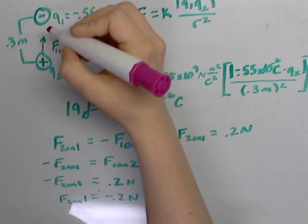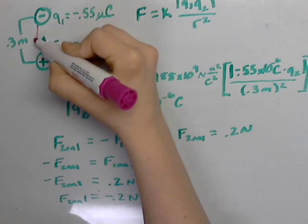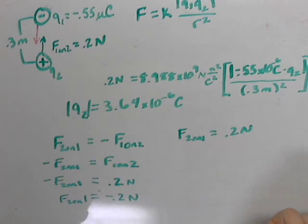Now we can go ahead and draw F of 2 on 1. Since it's negative, it's in the opposite direction of F of 1 on 2, and it's going to have the exact same magnitude.